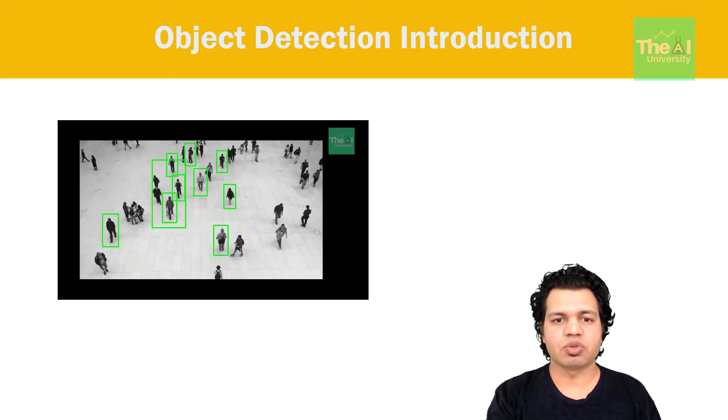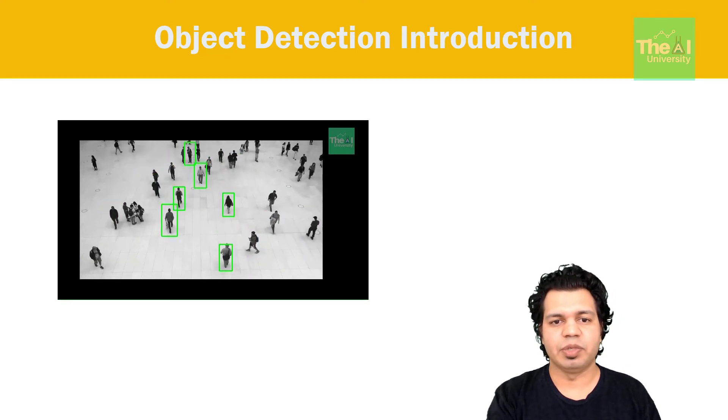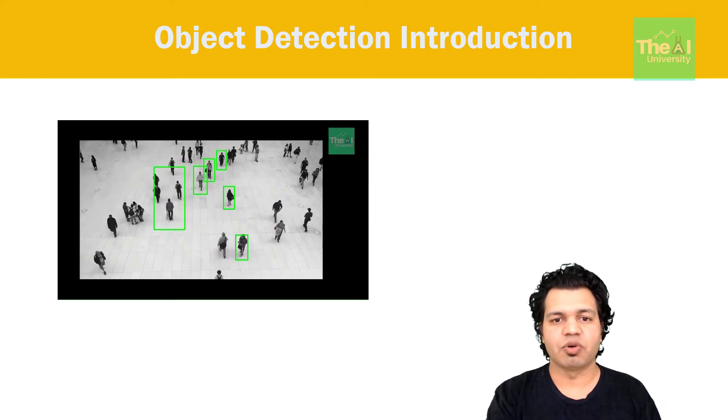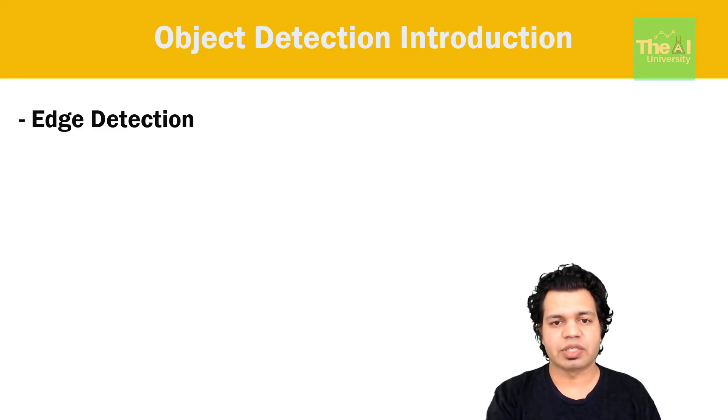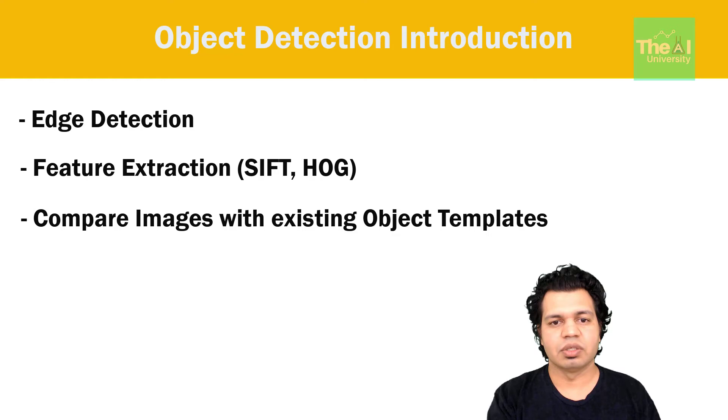If you are wondering what are those multiple steps people used to follow for object detection before the introduction of deep learning, then let me tell you that people used to start with edge detection followed by feature extraction using techniques like SIFT, HOG, etc. These images were then compared with existing object templates usually at multi-scale levels to detect and localize objects present in the image.